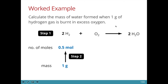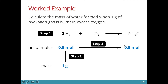Since for every 2 moles of hydrogen I get 2 moles of water, 0.5 moles will give me 0.5 moles. And finally, we have to convert the number of moles into mass because the question asks for mass. This is simply done by multiplying 0.5 times 18, which is the molar mass of water.